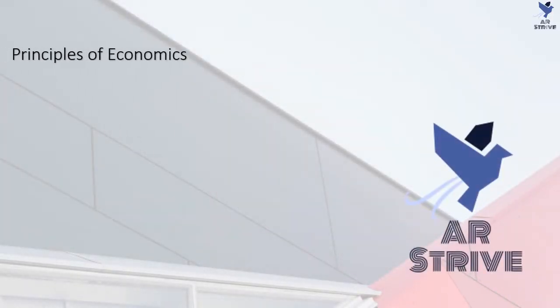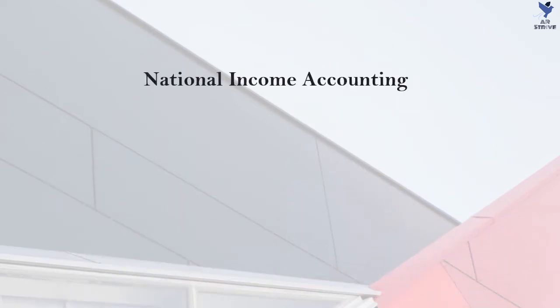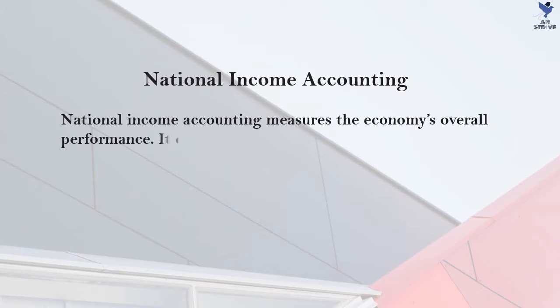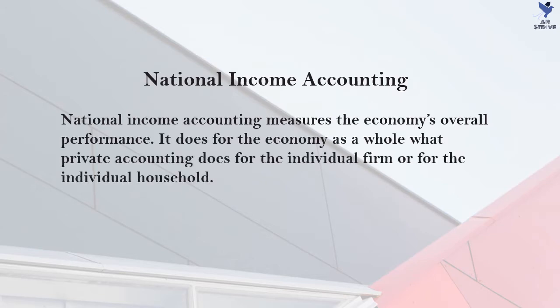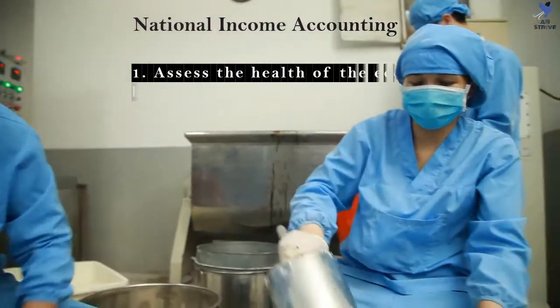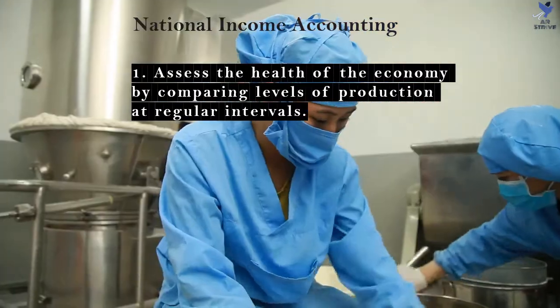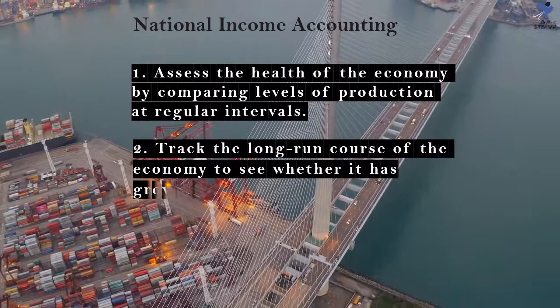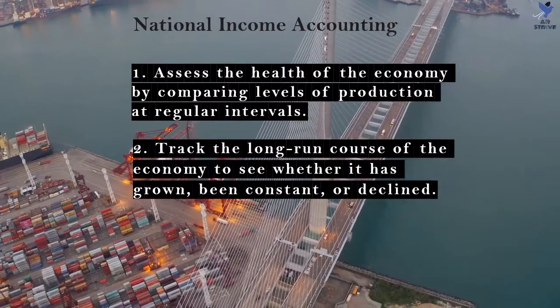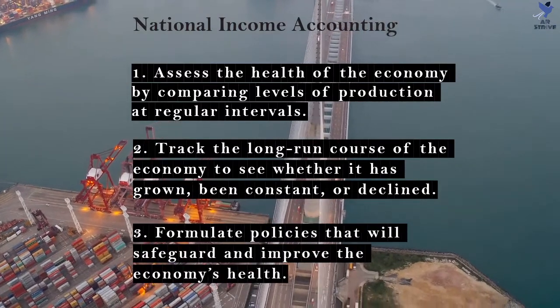Hello viewers, today we are going to talk about national income accounting. National income accounting measures the economy's overall performance. It does for the economy as a whole what private accounting does for the individual firm or household. This accounting enables economists and policy makers to assess the health of the economy by comparing levels of production at regular intervals, track the long-run course of the economy to see whether it has grown, been constant or declined, and formulate policies that will safeguard and improve the economy's health.